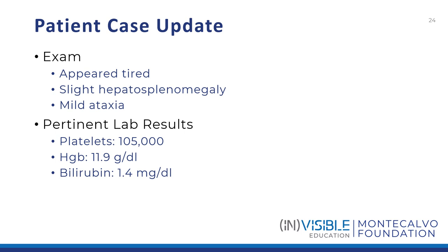Getting back to the patient from Indiana, she appears tired. She is neither pale nor jaundiced. Her spleen and liver are slightly enlarged. Her gait is mildly ataxic. She is mildly anemic and her platelet count is low. There is a slight increase noted on her blood smear.